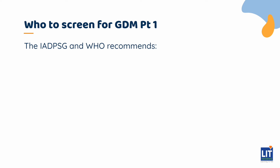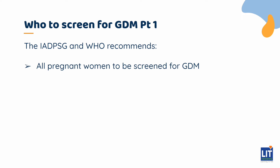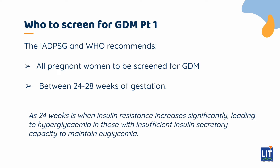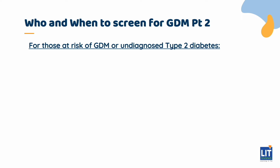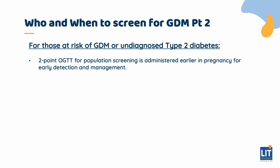The International Association of Diabetes and Pregnancy Study Group and WHO recommends that all pregnant women are screened for GDM between 24 to 28 weeks of gestation. This gestational age is chosen as 24 weeks is when insulin resistance increases significantly, leading to hyperglycemia in those with insufficient insulin secretory capacity to maintain euglycemia. For those at risk of GDM or undiagnosed type 2 diabetes, such as those with GDM in their previous pregnancy, the 2-point OGTT for population screening is administered earlier in pregnancy, around 16 weeks, for early detection and management.